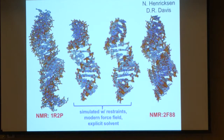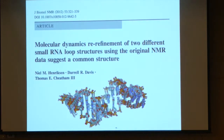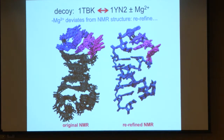If we have experimental restraints we can do a very good job reproducing RNA structure. We need extensive sampling, we have to be careful of bad assignments of the NMR data, and if we have residual dipolar coupling data that's even better — but there's still not an easy way to automatically refine these structures.